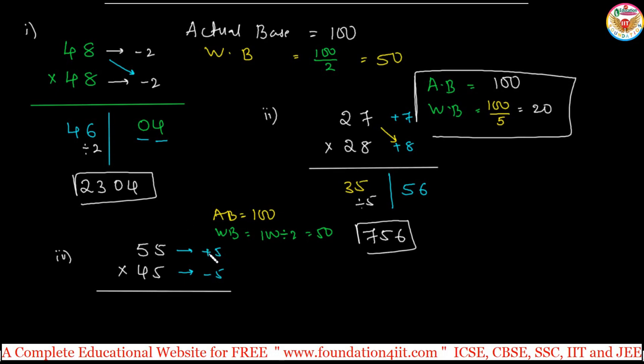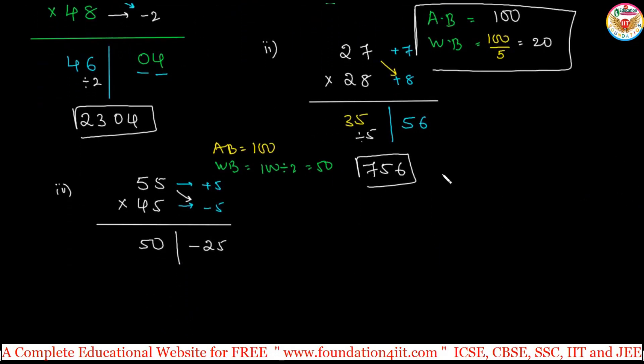One number is above and below. Same how we did the previous method. Plus 5, minus 5, so minus 25. And by subtracting, 55 minus 5 is 50. When you come to this, divide by 2 we did here, so same calculation, divide by 2 should be done. That is 25. But this is minus 25. Now actual base is 100, so that means from 2500, this 25 you can subtract, so 2475.